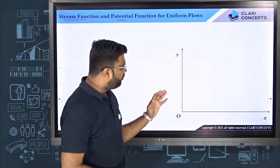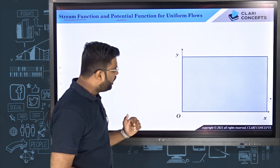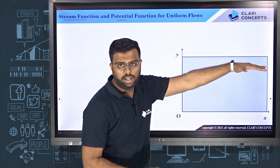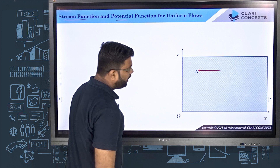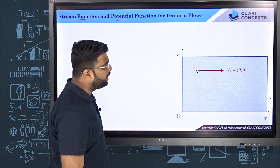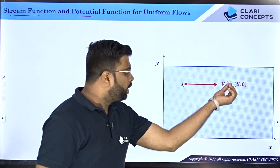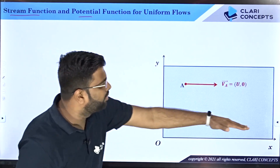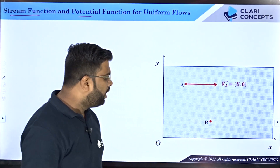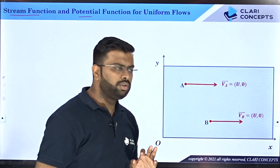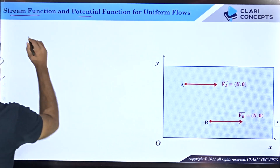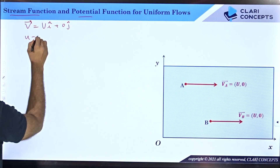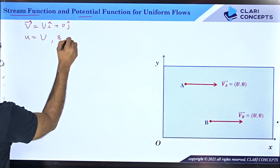Let us say I have a uniform flow flowing along the purely x-direction. Since it is uniform, at each and every point the flow has the same velocity. If I mark point A and find the velocity vector, I get u = (U, 0), where capital U is the component along x and there is no flow along y. The same velocity vector will be everywhere because the flow is uniform, so the flow field is v = Ui + 0j, meaning small u equals constant capital U and small v equals zero.